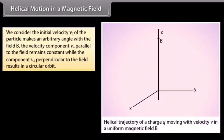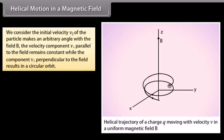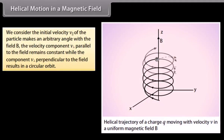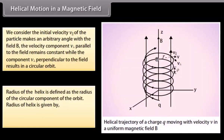Helical motion in a magnetic field: We consider the initial velocity V of the particle that makes an arbitrary angle with the field B. The velocity component parallel to the field remains constant, while the component perpendicular to the field results in a circular orbit. The radius of the helix equals M·V⊥ / QB, where V⊥ is the perpendicular component of velocity.